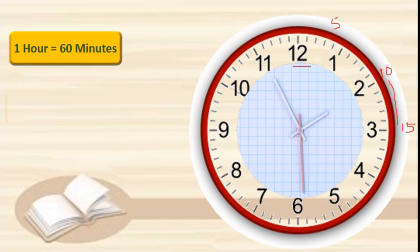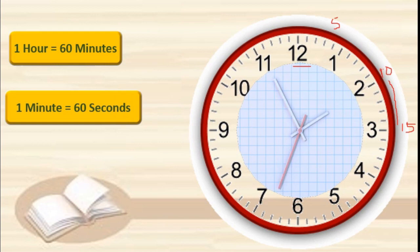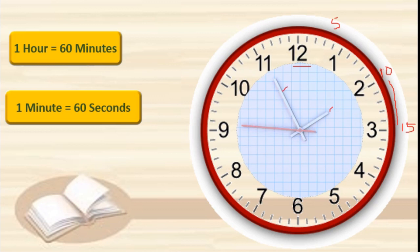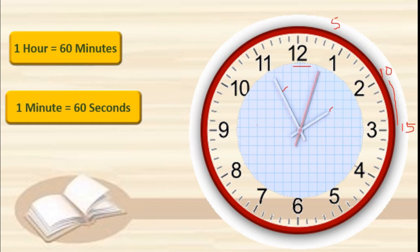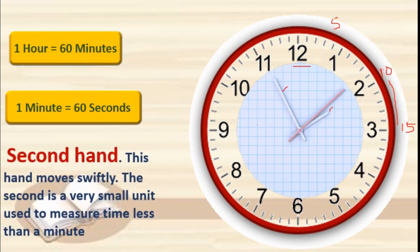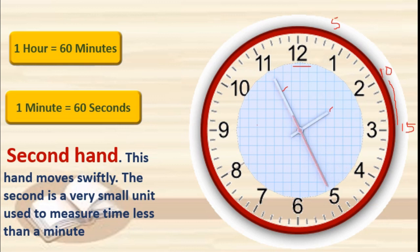And one minute is equal to 60 seconds. Here you can see the second hand — this is the second hand. This is the hour hand, this is the minute hand, and this is the second hand. When the second hand takes one full round, then the minute hand changes its position by one digit. The second is a very small unit used to measure time less than a minute. The units are: second, then minute, then hours.